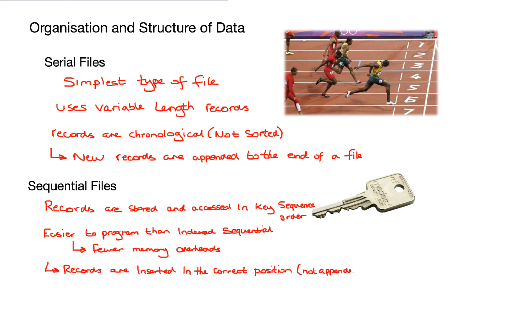And the key difference between sequential files and serial files is that in sequential files, records are inserted in the correct position. They're not appended onto the end of the file. In order to add a record into the file, we copy all of the data across to a new temporary file. And then at the point of insertion where we want to add the new record, we add it in. And then we copy across the remaining portion of the old file into the new temporary file. And then we delete the old file and rename the new one.